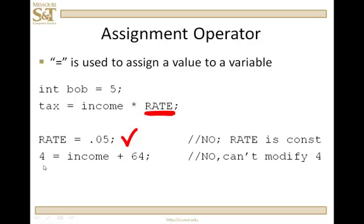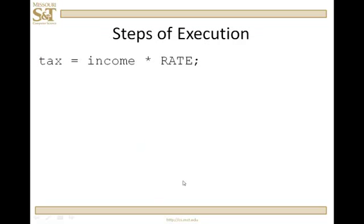And in the fourth example, I have four equals income plus 64. Well, I'm trying to assign to the left hand side a value that is not four. I can't modify four, I can't change four. The compiler won't let me change a constant literal.